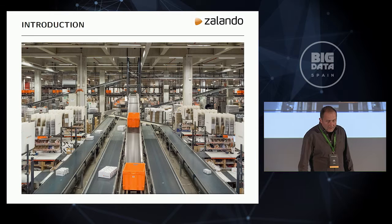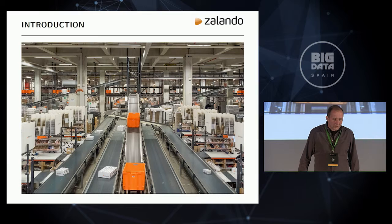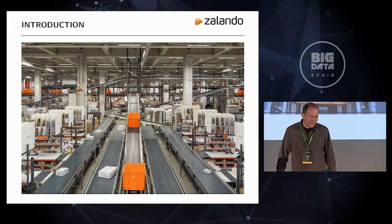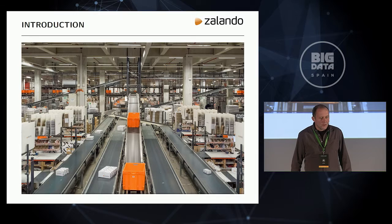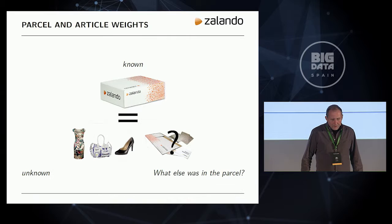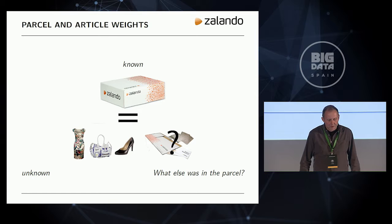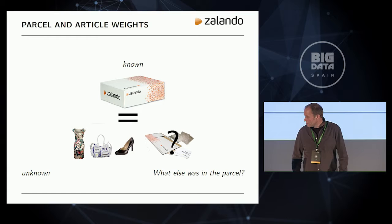Interestingly and luckily, in the outbound process in the warehouse, all parcels go through a large maze of conveyor belts, and at some point on this conveyor tour there is an automatic high-precision scale and volume scanner. So we know virtually the weight and volume of all parcels we ship out. The question is: when we know the weight of the parcel and we know what has been in there, couldn't we deduce the weight of the articles from just the parcel weights? And that's exactly what we try to approach.